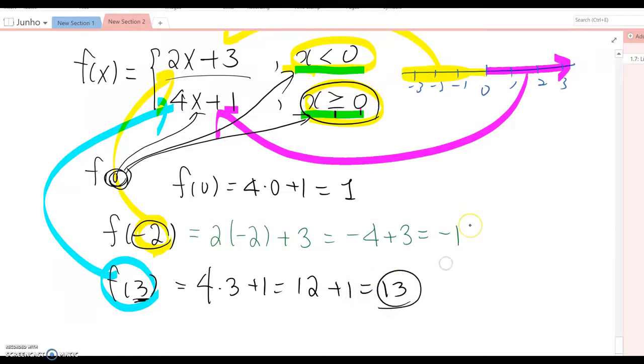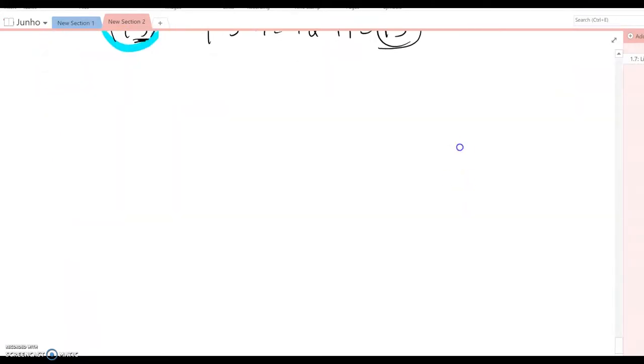Okay, then look at one more example which has more conditions based on x intervals. Such as f(x) equal to absolute value of x plus 4 minus 2, and 3x minus 6, and 8.